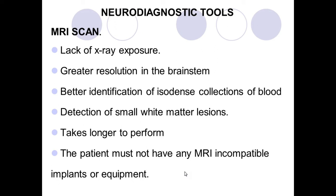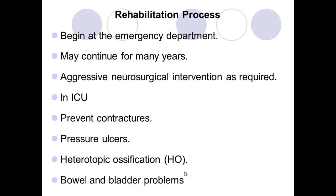Injury severity is measured using the Glasgow Coma Scale (GCS), which assesses eye opening, best verbal response, and best motor response, with a total score of 15. Eye opening is scored 1–4: spontaneous (4), to speech (3), to pain (2), no response (1). Verbal response is scored 1–5: oriented (5), confused (4), inappropriate words (3), incomprehensible sounds (2), no response (1).